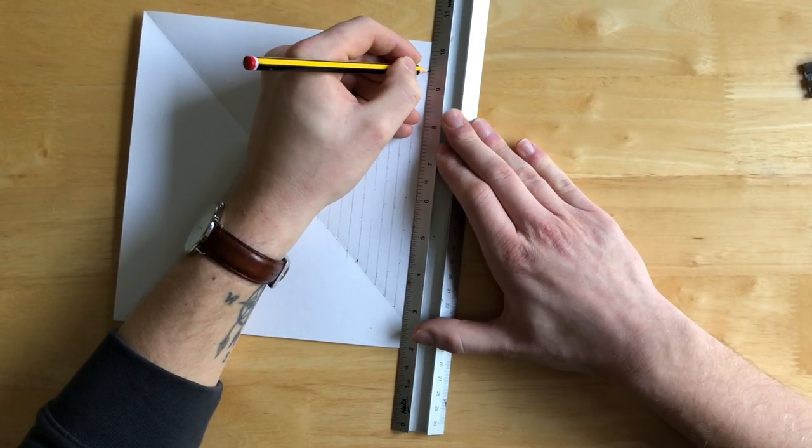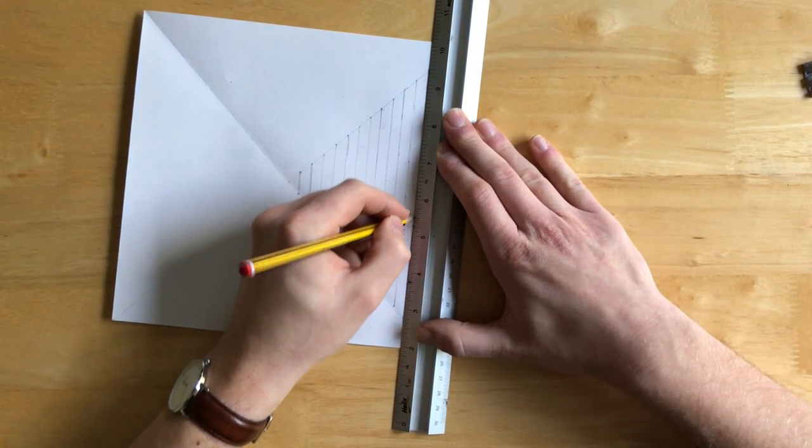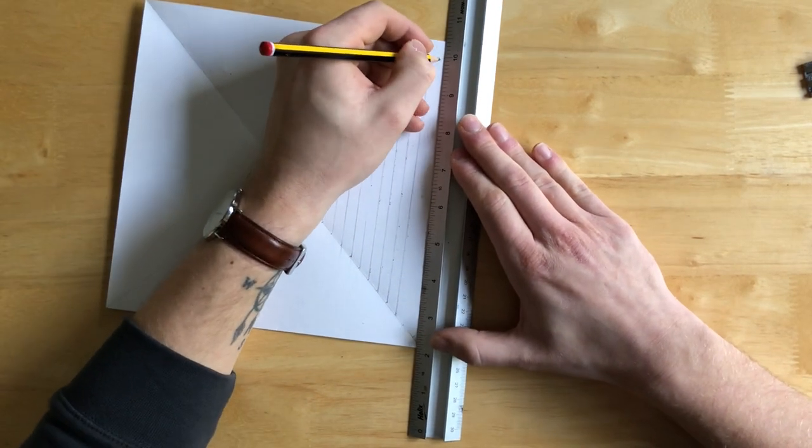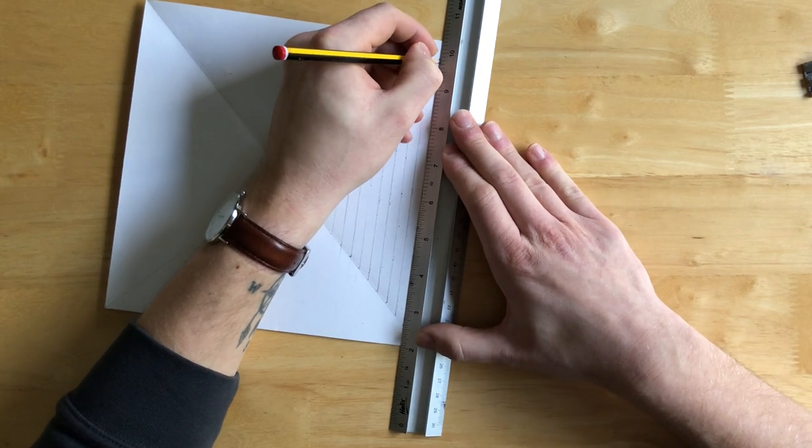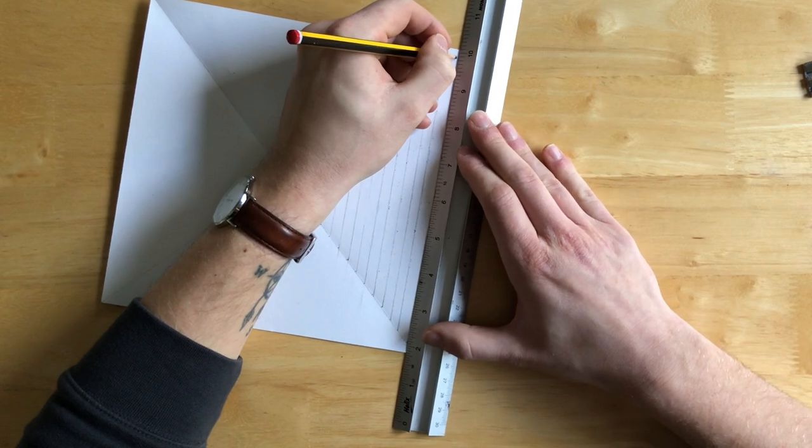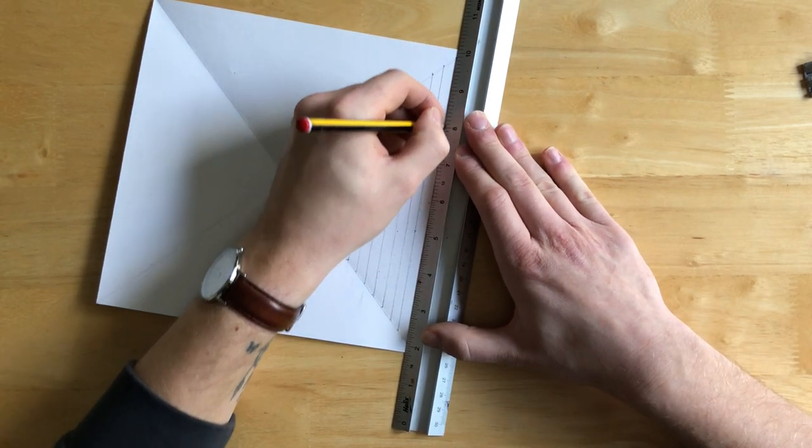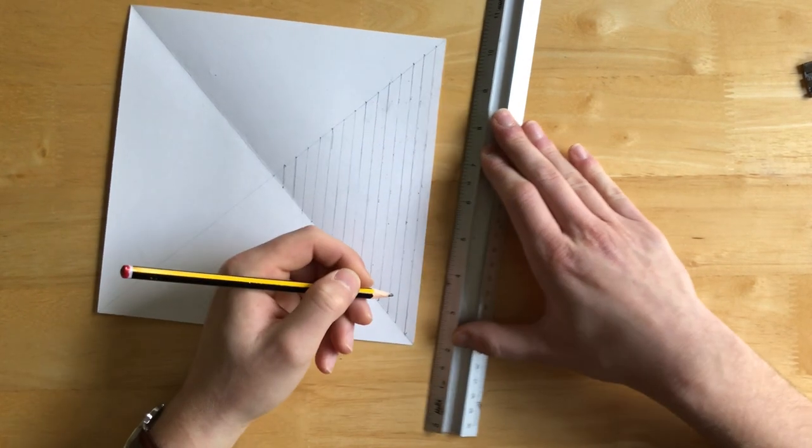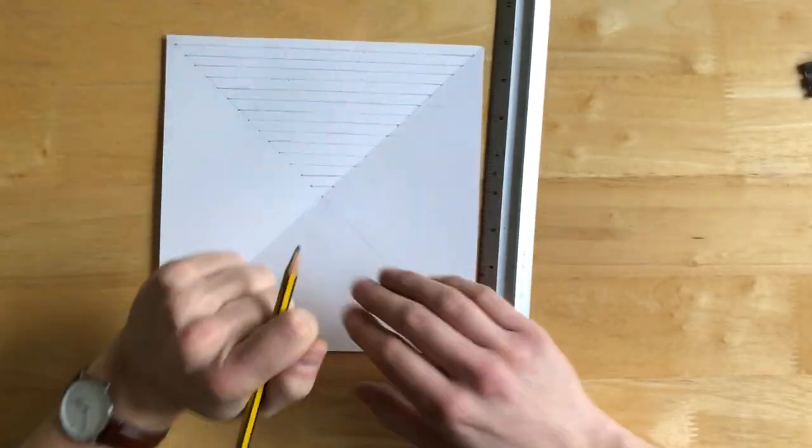So we're going to measure then centimetre across the next triangular line. And then we're going to connect those lines up. And we should end up with a pattern that looks similar to the pattern in the photograph that I showed you at the beginning of the lesson. So that's the first one done.